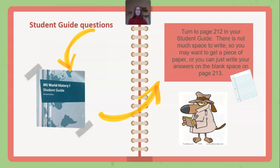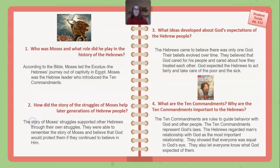Go ahead and open your student guide to page 212. There's not much area for writing, so you may want to get a blank piece of paper, or write in the blank space on page 214 where there's some open space. Question number one: Who was Moses, and what role did he play in the history of the Hebrews?